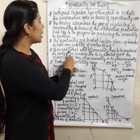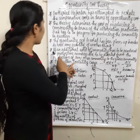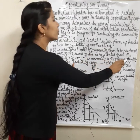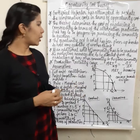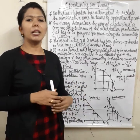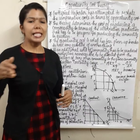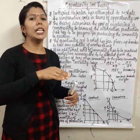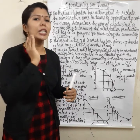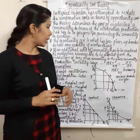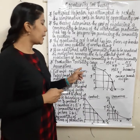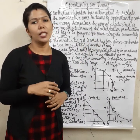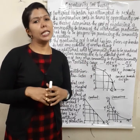If an additional unit of a commodity has to be produced, the productive resources are to be diverted from the production of some other commodity to the given commodity. We will explain this opportunity cost theory with the help of the production possibility curve.